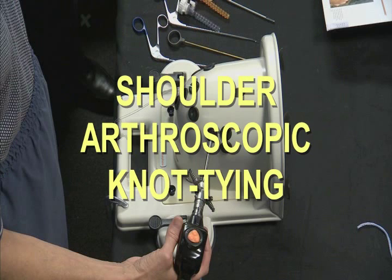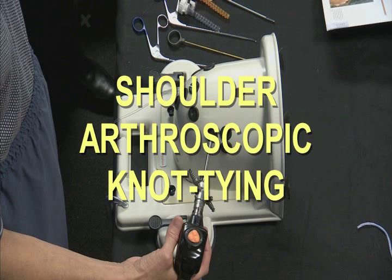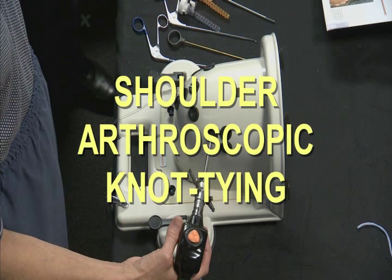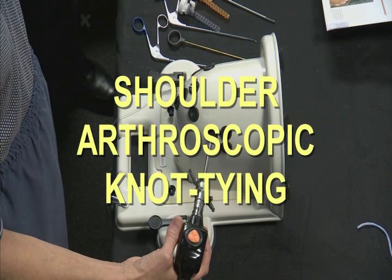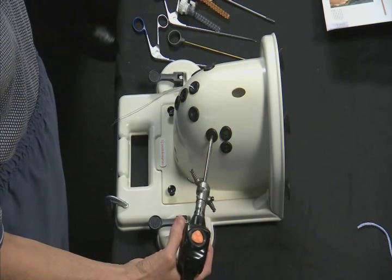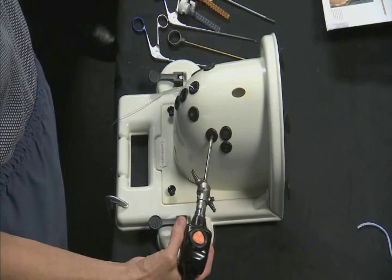To become proficient in arthroscopic surgery, one must practice, practice, practice. Having access to a shoulder model and knot tying posts is very important. This is a SAM model. Practice a lot before you get into live surgical action.